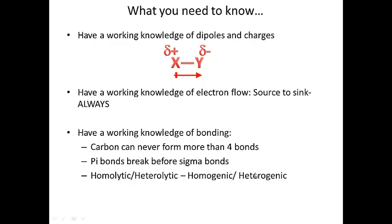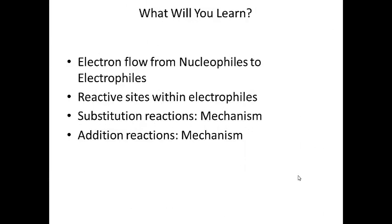We're also going to talk about homolytic and heterolytic bond cleavage, and homogenic and heterogenic bond formation. For this video, we'll focus on heterolytic and heterogenic bond formation and bond cleavage. So let's look at the next slide — what you're going to learn from this video. Electrons flow from nucleophiles to electrophiles, which is the same as saying from source to sink. We're going to learn what the reactive site is within an electrophile — we call that the electrophilic site, which is the atom in the electrophile that's accepting the pair of electrons. We're also going to learn about substitution and addition reactions along with their mechanisms.